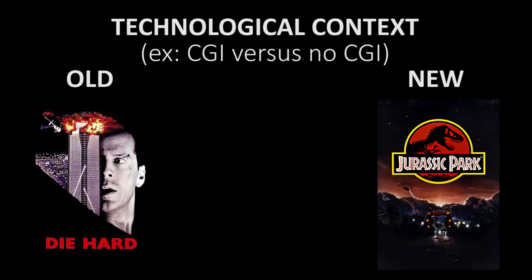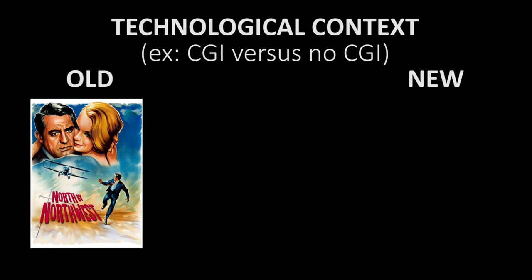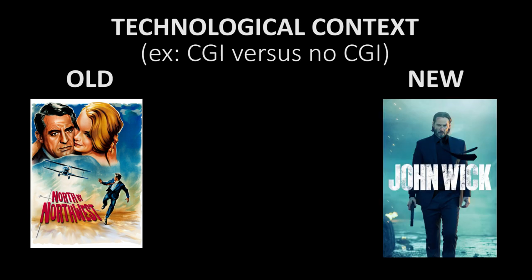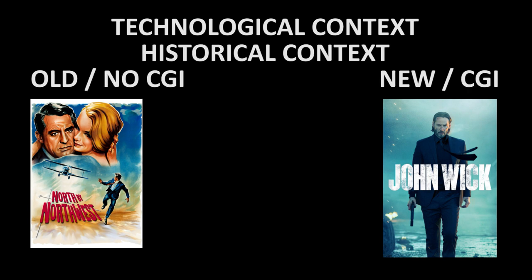Maybe if I wanted to compare North by Northwest to a modern movie, instead of Die Hard I'd choose John Wick, because it also has the technology angle. So you're being asked to pick two movies from two different cultural contexts. If I pick North by Northwest and John Wick, the two cultural contexts would be historical and technological. This gets us into topic — which means you've selected a film genre, film theory, or film movement. In our case, we've picked the action adventure film genre, and two films from two different cultural contexts: John Wick and North by Northwest.